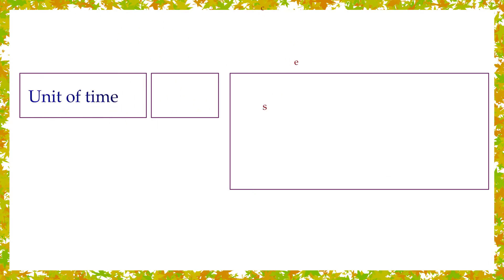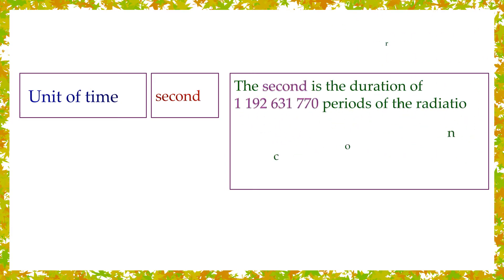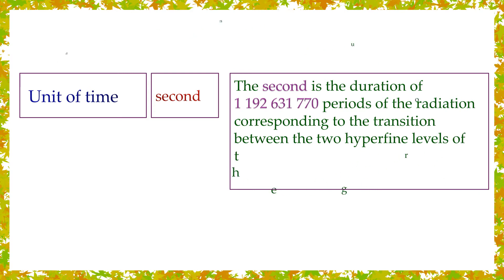Unit of time: second. The second is the duration of 9,192,631,770 periods of the radiation corresponding to the transition between the two hyperfine levels of the ground state of the cesium-133 atom.